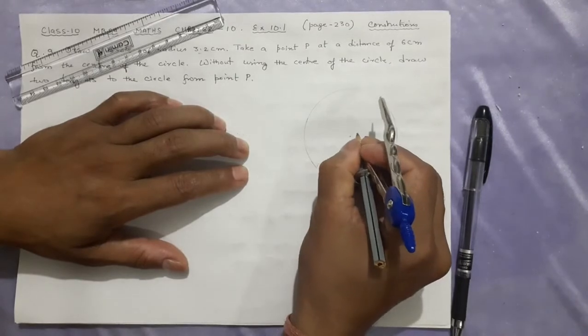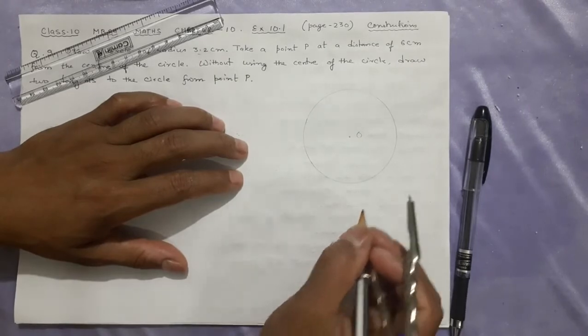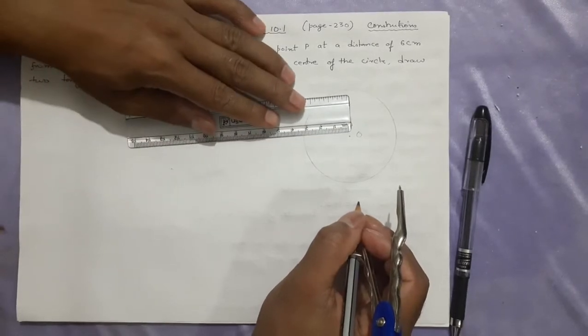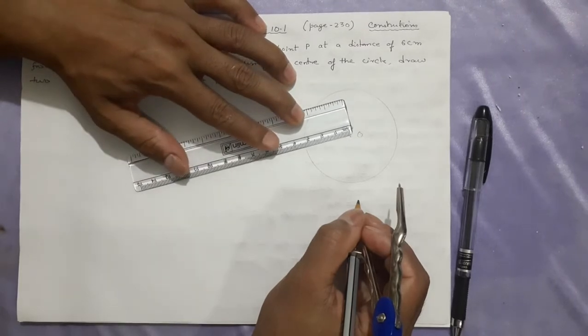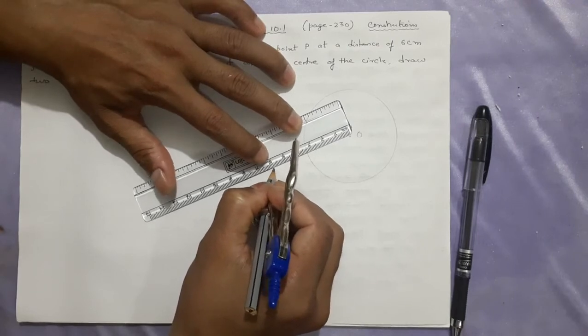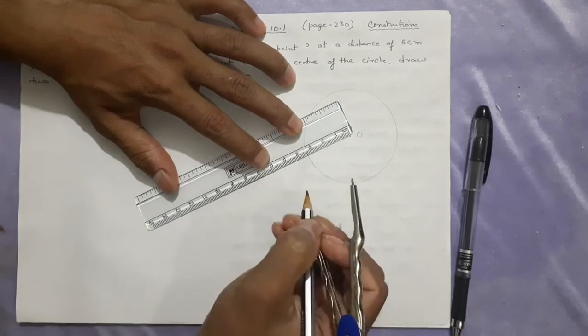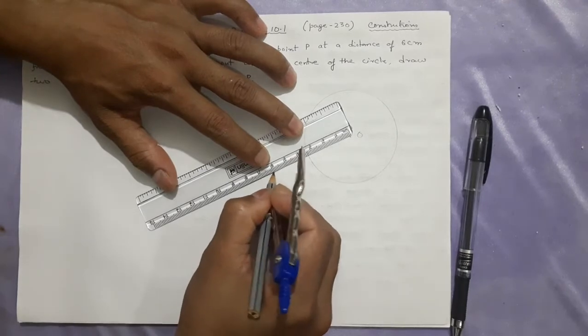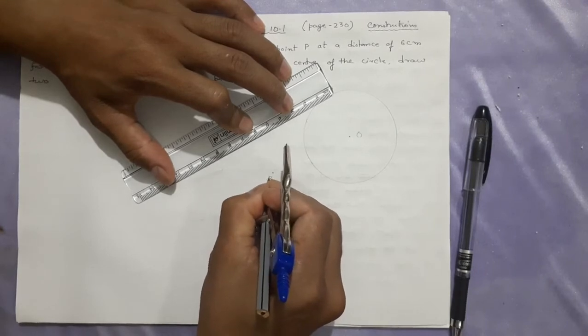This will be your center O, which will not be used after this. After that, you take a point P outside the circle, 6 cm away. Let me take this point here, about 6 cm from the center. This will be that point from the center, 6 cm, because in the question it is said to take that point 6 cm away.